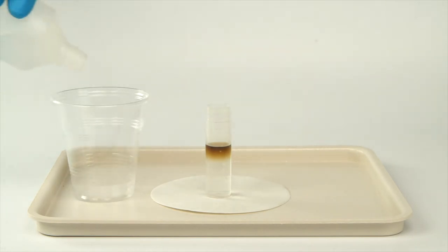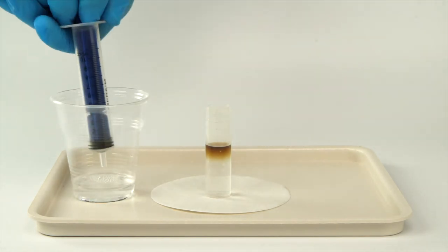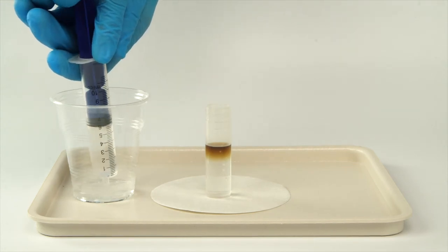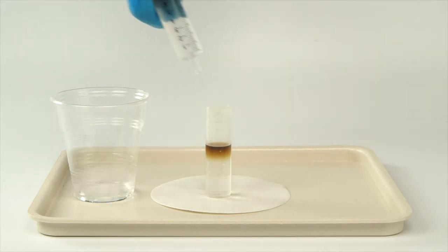Next, add an oxidizer. Pour some 3% hydrogen peroxide into your plastic cup. Using your syringe, fill the vial to the brim with hydrogen peroxide.